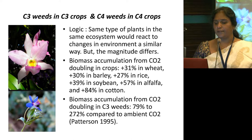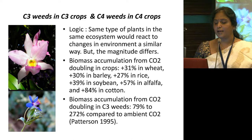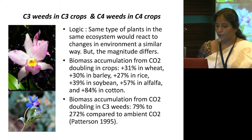Biomass accumulation from CO2 doubling in crops is close to 30 to 40% in most crops — cotton is exceptional at 84%. But at the same time, for the doubling of CO2, the biomass accumulation in C3 weeds is 79% to 272%. You can imagine how much biomass increase would happen because of doubling of CO2 in the case of weeds compared to crops.